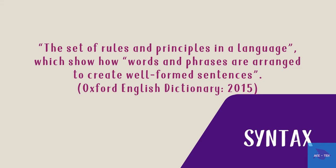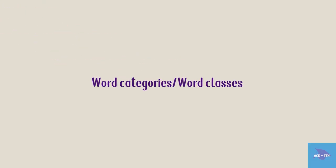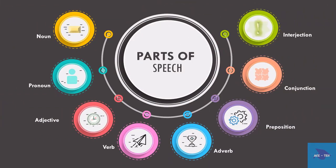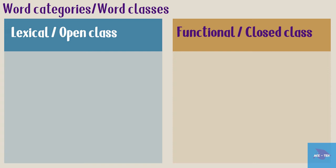Syntax studies the ways in which word categories can be ordered and combined. These word categories, or word classes, are similar to the more traditional term we studied in school: parts of speech. Don't forget to check out our grammar videos that deal with each part of speech. There are two major families of word classes. Lexical classes are open class words, and function words are closed class words. The lexical categories in English are noun, verb, adjective, and adverb.